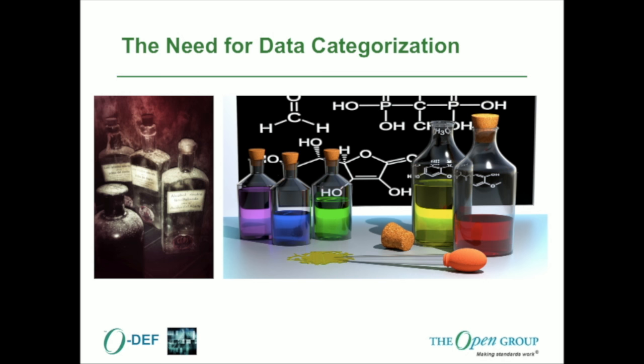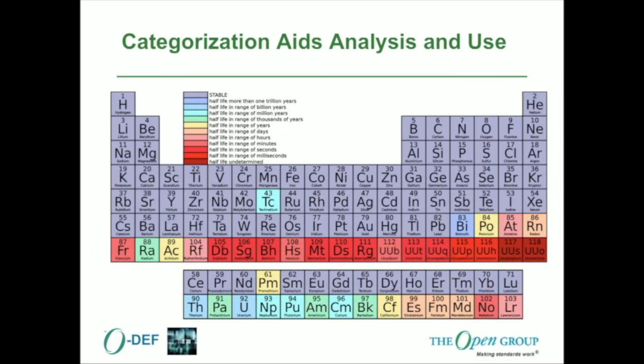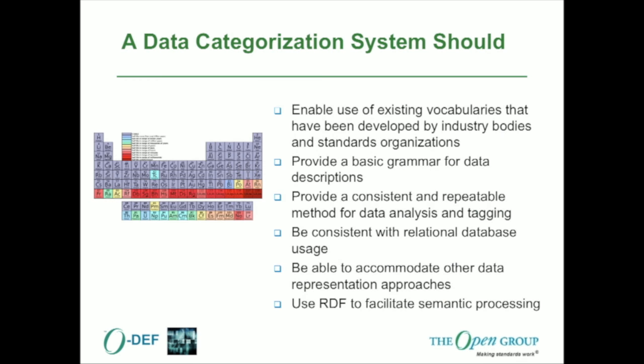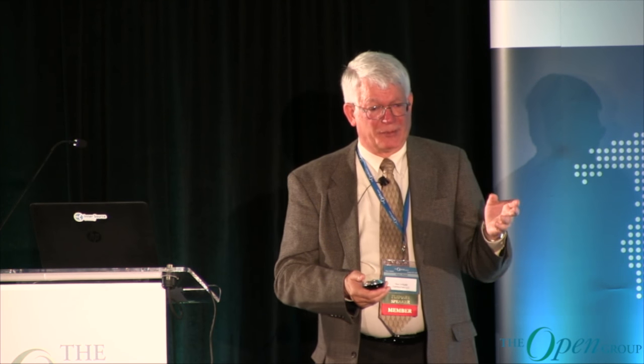In the real world, you've got the elements found in the universe, and for that you've got the periodic table. The periodic table helps you categorize all of the elements we've found in the universe, and it's essential because when you start combining things, you end up with molecules and compounds. I'd like to suggest that in the same way you've got elements of the universe, you've got data elements within the enterprise. Having a framework that can categorize data elements is essential to being able to use and analyze them.